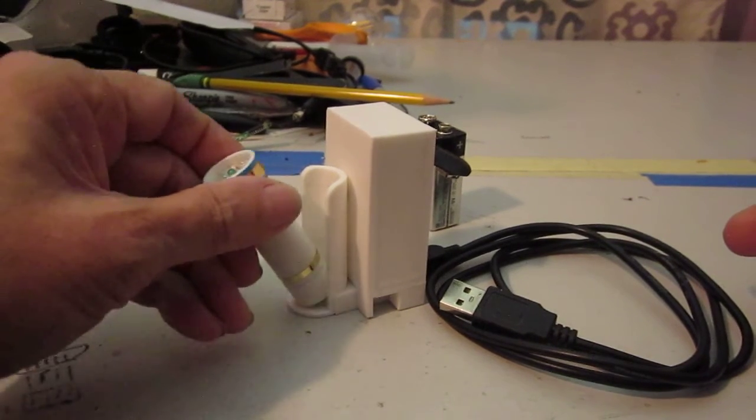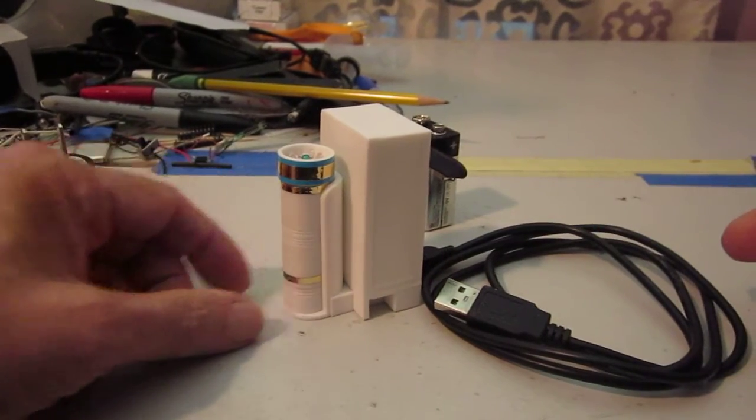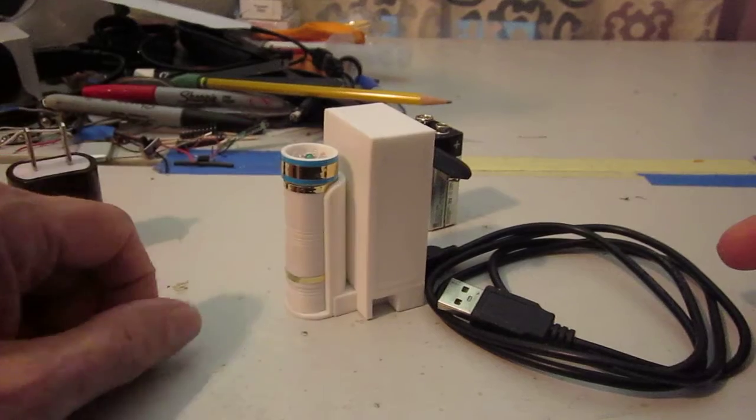So basically all it has to be done is it just sets in there and then the two magnets take over and they charge the little hand scanner.